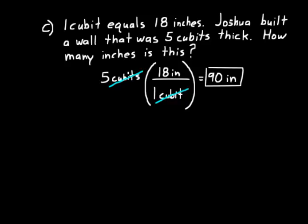To summarize: a unit multiplier is a fraction equal to 1, because the numerator and denominator represent equal quantities — they just look different because different units are used. If you need more practice, do the practice problems in the book and the supplemental exercises in the back. If you get these down now, your algebra and science in high school will be much easier. That's all for Lesson 50.